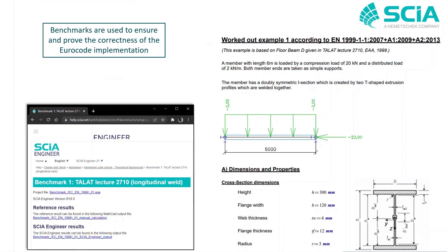At SCIA we value the quality of our development above everything, therefore we heavily test whatever we develop, and that's no different for aluminum. We use benchmarks which you can always find on our help website at help.scia.net. There you can see what the benchmark calculations look like, what the results are, and how they compare to SCIA Engineer — and of course we make sure they correspond closely.